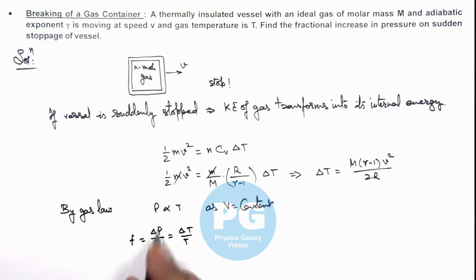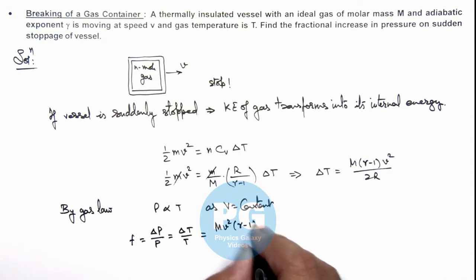That is the fractional increase in pressure, and we can substitute the value of delta T here. So it is m v squared gamma minus 1 divided by 2RT. That is the result of this problem.